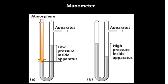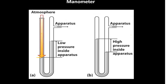Whereas a barometer is a device used to measure the absolute atmospheric pressure, a manometer is a similar but different device in which one can compare the pressure of a gas within some sort of a vessel or apparatus to the atmospheric pressure and make a pressure measurement on the gas.